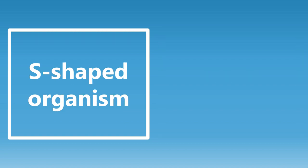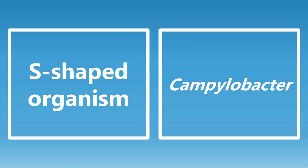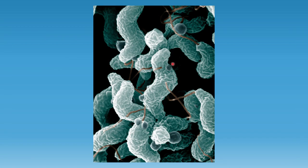An S-shaped organism — they love to ask about organism shapes. An S-shaped organism is going to be Campylobacter. As you can see in the visual here, especially the one in the center, it has that S-shape under scanning electron microscopy. The important thing to note is this is not twisted like a spirochete would be — it doesn't have a corkscrew shape, it's just bent in the shape of an S. That's a really important way to differentiate Campylobacter from spirochetes.